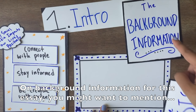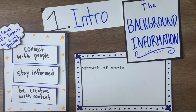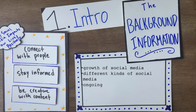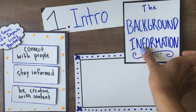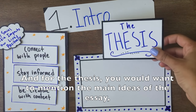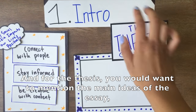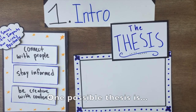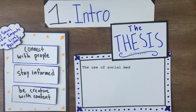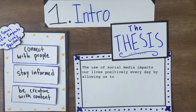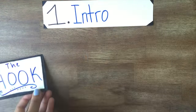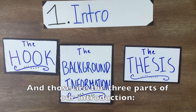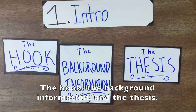On background information for this essay, you might want to mention how social media has grown in the past few years, the different kinds of social media, and the ongoing debate about whether or not it's a positive influence in our lives. And for the thesis, you'd want to mention the main ideas of the essay and state your position on the issue. One possible thesis is: the use of social media impacts our lives positively every day by allowing us to connect with other people, stay informed about the world, and be creative with online content. And those are the three parts of our introduction: the hook, the background information, and the thesis.